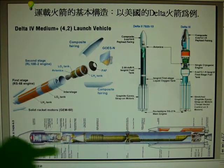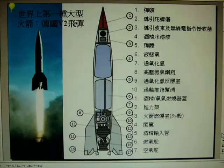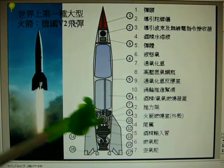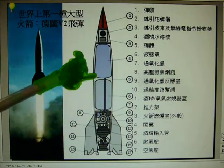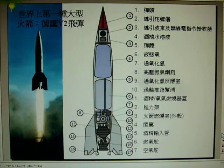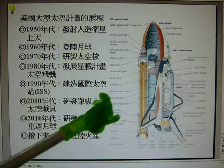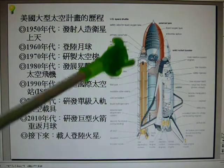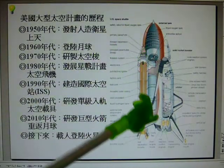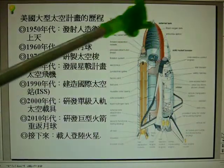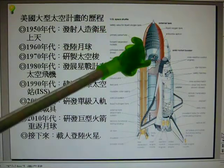This page also shows another picture of the Delta rocket. We will also introduce another example: the Germany V2 missile. Its structure contains a liquid rocket engine, acidity tank, fuel tank, and a bomb in the head.